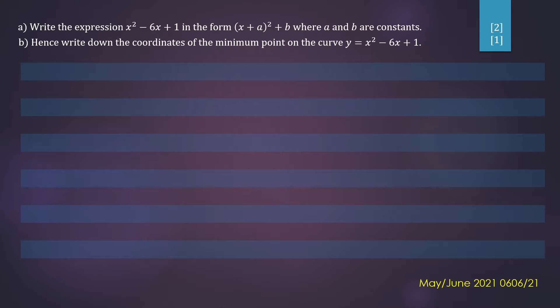So for question A we have x squared minus 6x plus 1, and we need to write it in this form x plus a all squared plus b. Notice that the right side is in a completed square form, so we need to complete the square on this left side.